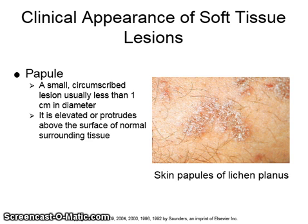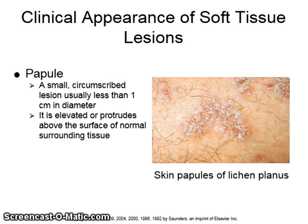The next term is papule. A papule is a small, circumscribed lesion, usually less than one centimeter in diameter. It is elevated or protrudes above the surface of normal surrounding tissue. The picture on the right shows the skin papules of lichen planus.